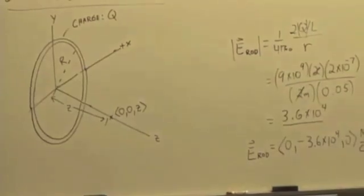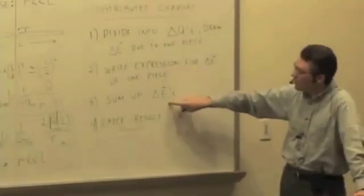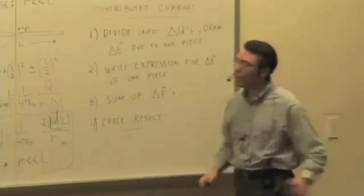So we're going to go through the same steps again. We're going to break it up into pieces, write an expression for the delta E of one piece, sum up all the delta E's, and then check the result.